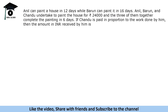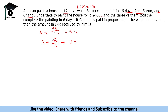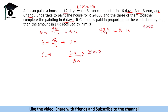Next question. Anil can paint a house in 12 days, Barun in 16 days. LCM is 48, so total work = 48 units. Anil does 4 units/day, Barun does 3 units/day. A, B and C undertake for ₹24,000 and together complete in 6 days, so they do 8 units/day. C does 1 unit/day. C's share = 1/8 × 24,000 = ₹3,000.